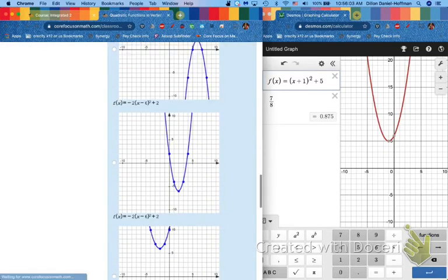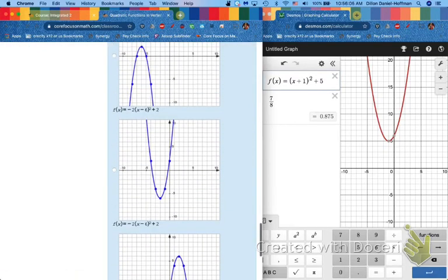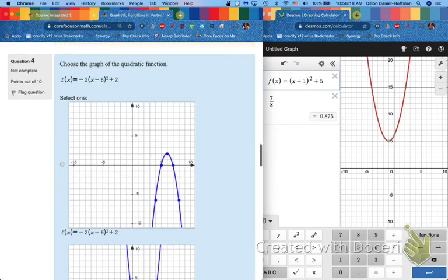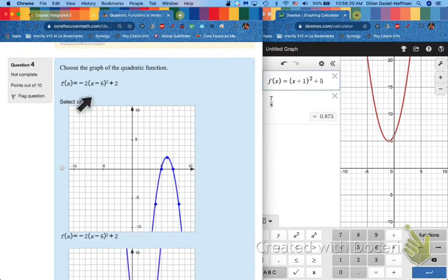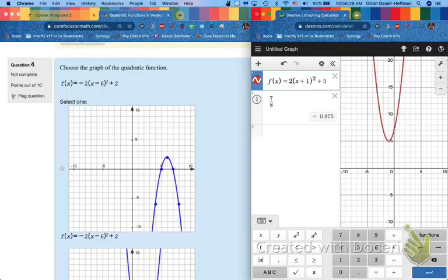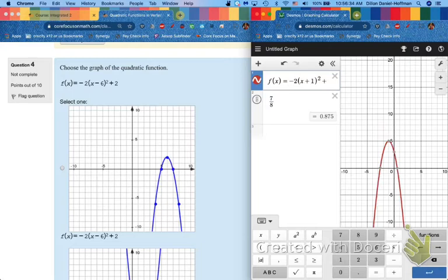All right the next one's interesting because it's the first time that we have a situation where we have a negative sign. Check this out, a negative sign on the very front of our graph. Let's zoom in, let's go 125 here. A negative at this point in the graph, let's see what happens. We know that the two is going to make it twice as vertically stretched it's going to become skinnier but what does the negative do?